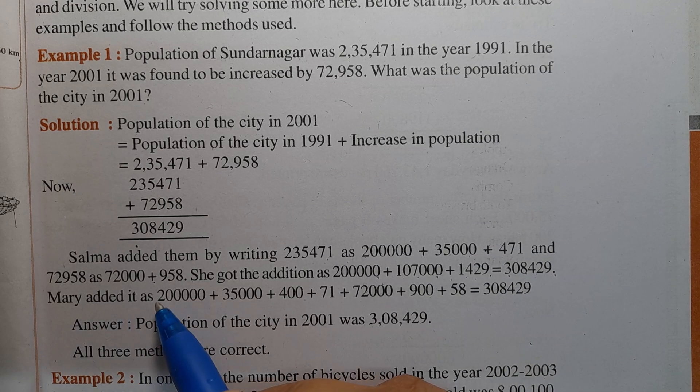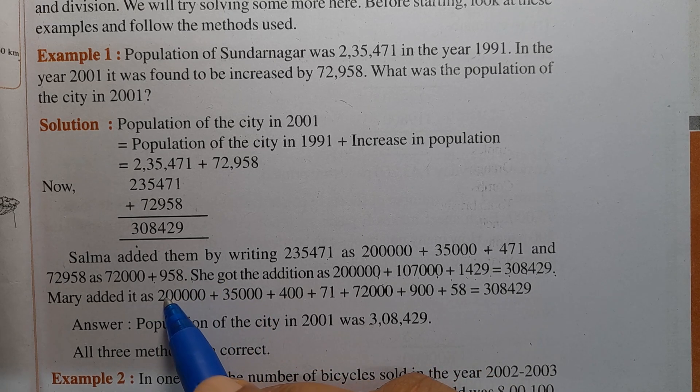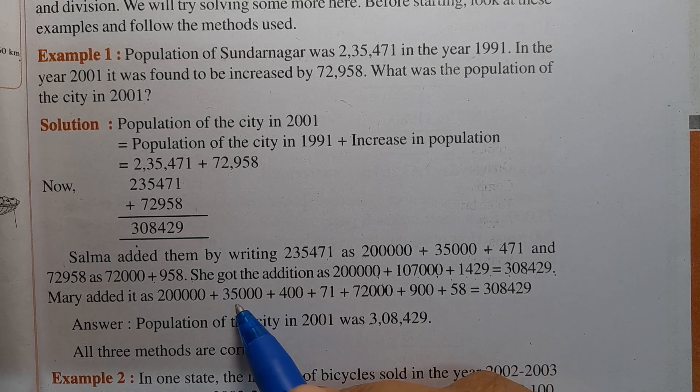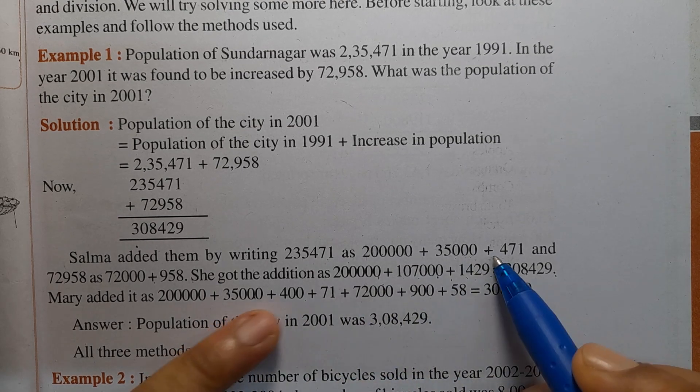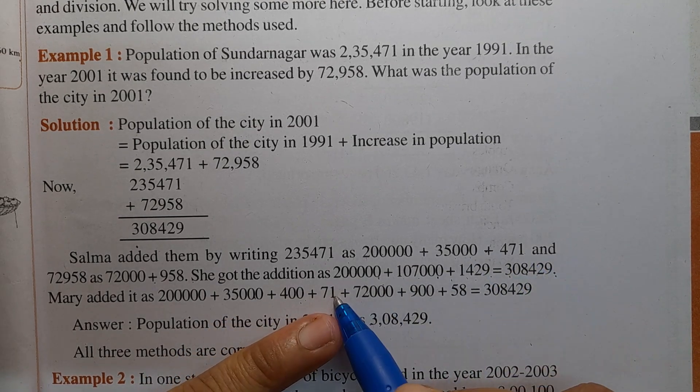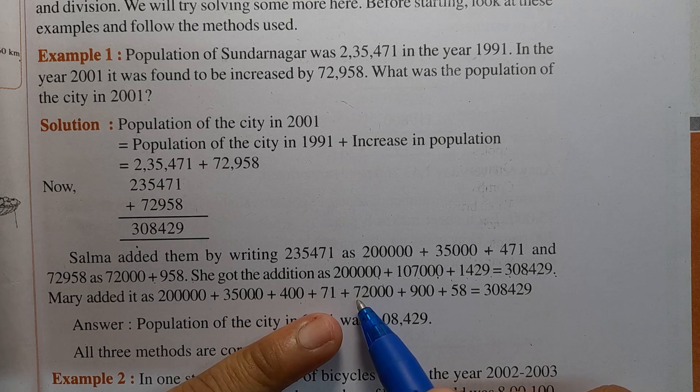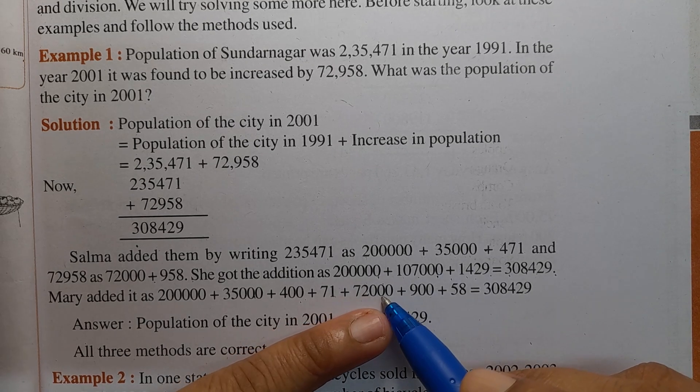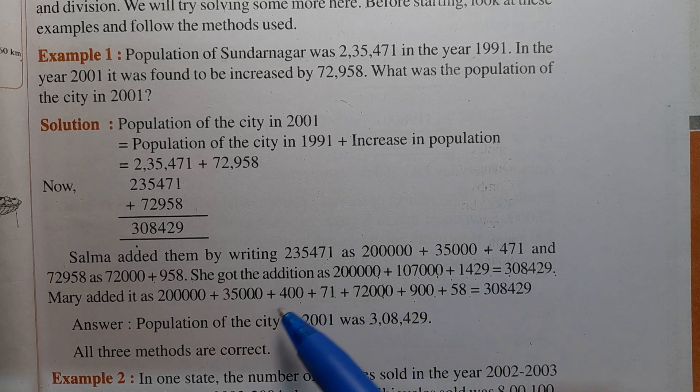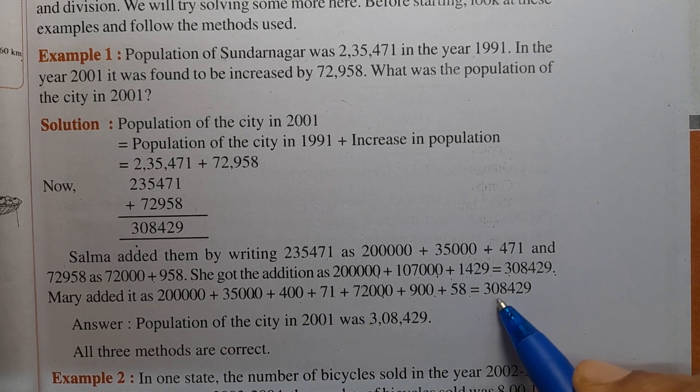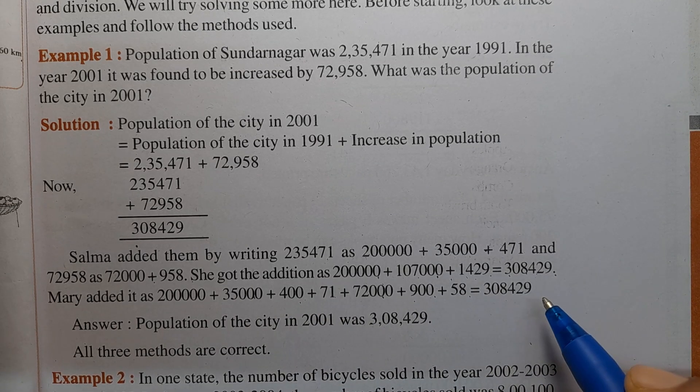Mary added it as 2,00,000 plus 35,000 plus 400 plus 71, plus 72,000 plus 900 plus 58. The answer is 3,08,429.